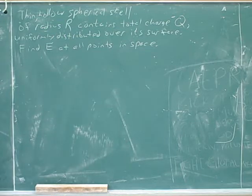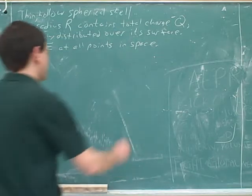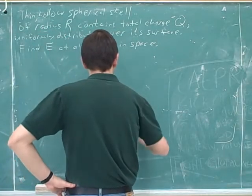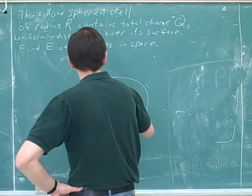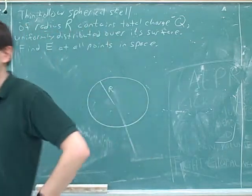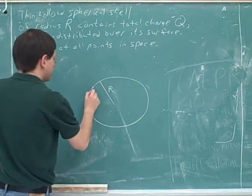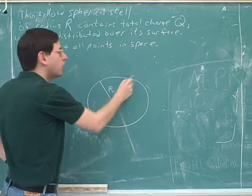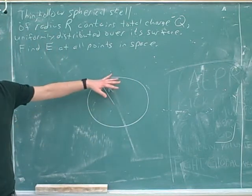So there's only charge on the surface. That's the key. There's only charge on the surface. That's the key. So now all the charge is distributed on this surface. Although, again, it's not just a circle. It's a whole sphere.